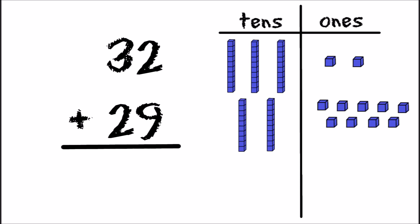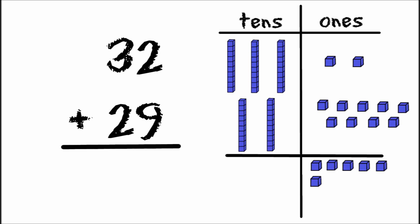So let's count all of our ones again: one, two, three, four, five, six, seven, eight, nine, ten, eleven. Two plus nine equals eleven.